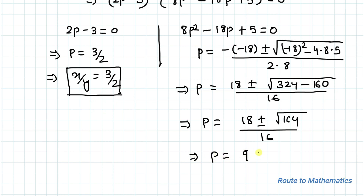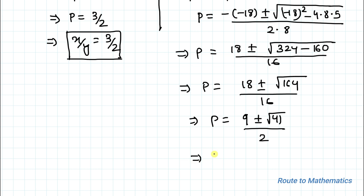This gives p equals (9 ± √41) divided by 8, which is another solution for x by y. I hope you have understood the solution. Thanks for watching — please subscribe to my channel and click the bell icon for more such interesting videos. Thank you.